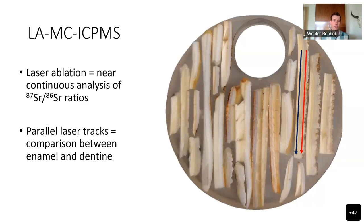The method we used was laser ablation, because it offers near-continuous analysis of strontium isotope ratios, ensuring that minor fluctuations would not be missed — whereas the conventional intra-tooth method of taking 1–2 millimeter samples risks missing minor fluctuations. We were also able to place parallel tracks, as you can see in the image on the right with the red and black lines, a simplified schematic overview of the laser tracks placed in both the enamel and the dentine alongside each other.